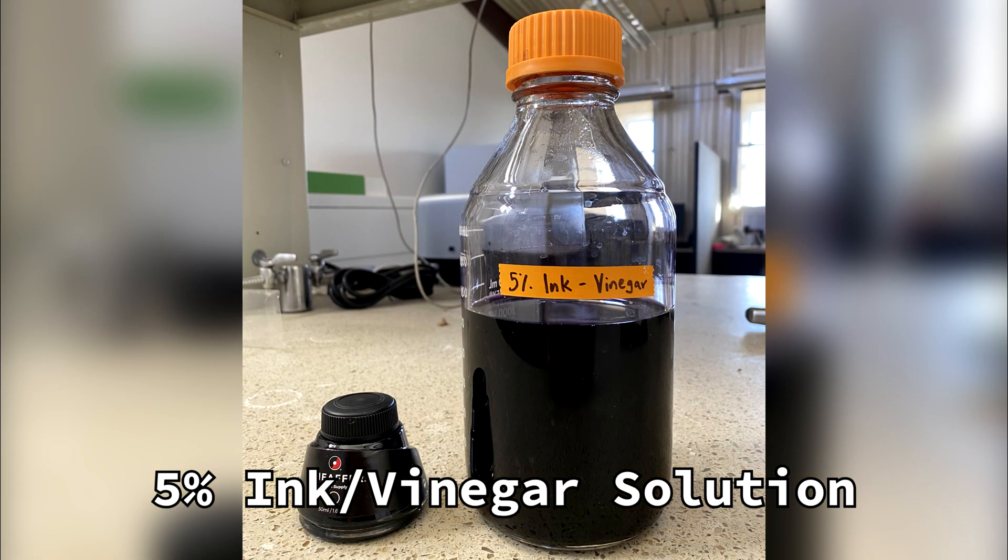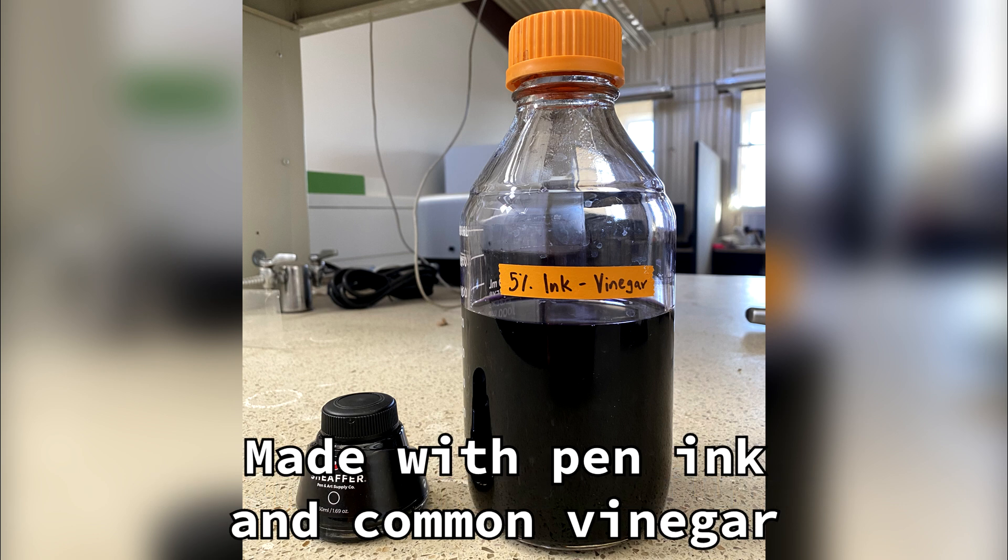You'll also need a 5% ink vinegar solution, which stains any fungi that are in or around the root cells, both AMF and non-AMF. To make this, you can use pen ink—we use Schaefer black ink—and then mix it with regular cooking vinegar.